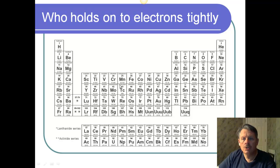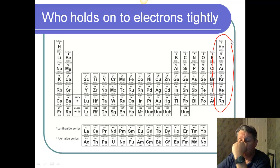So who holds onto electrons tightly? Well, we know that the noble gases hold onto them really tightly. The noble gases are here and they don't let go, nor do they actually take any. They just hold onto them tightly.